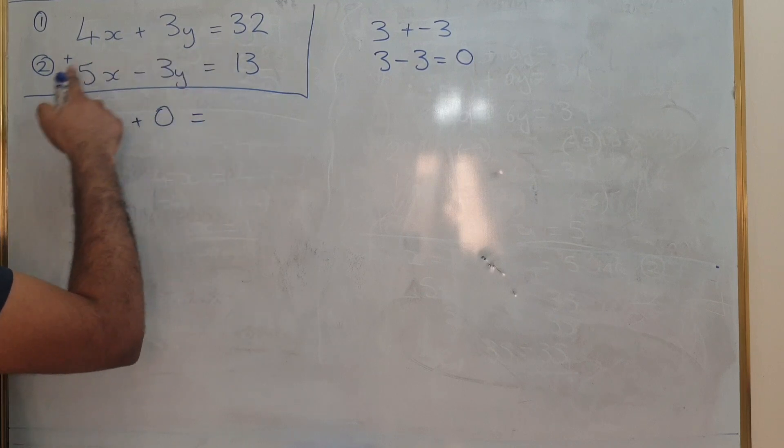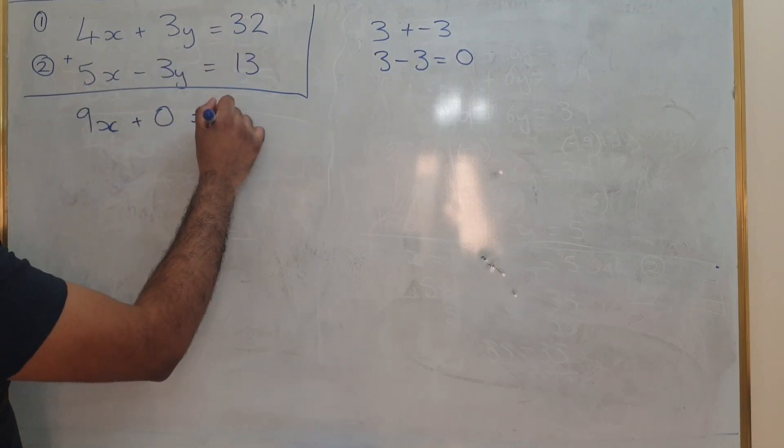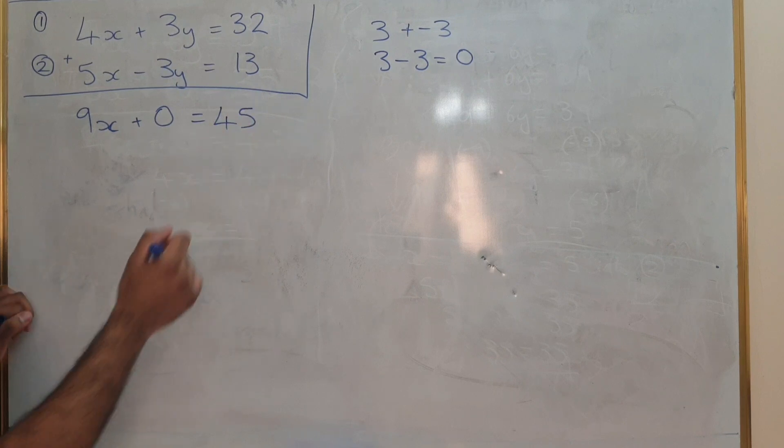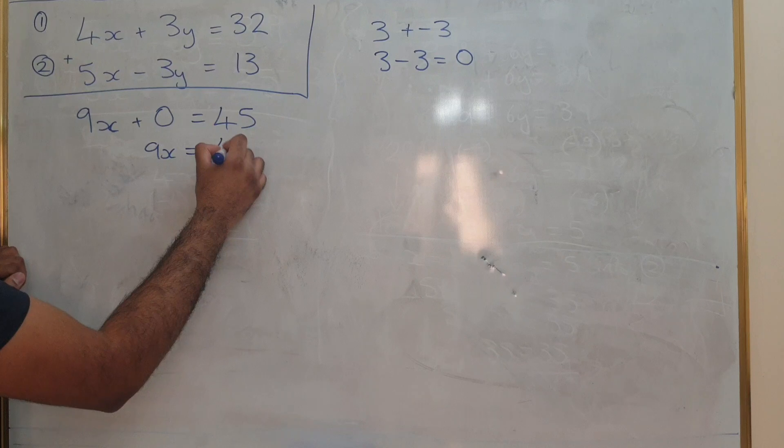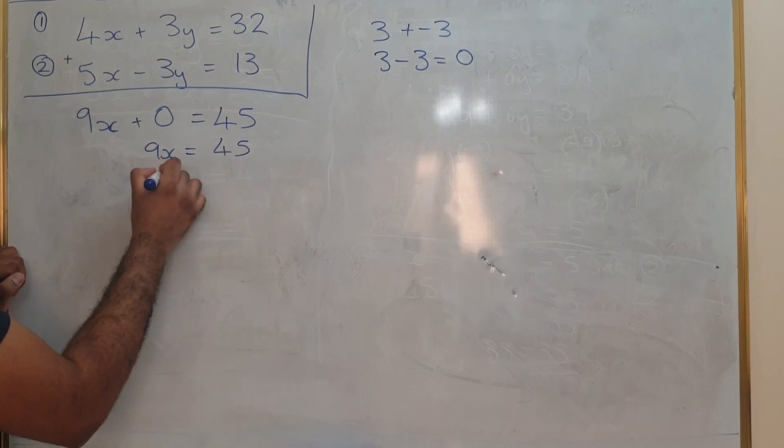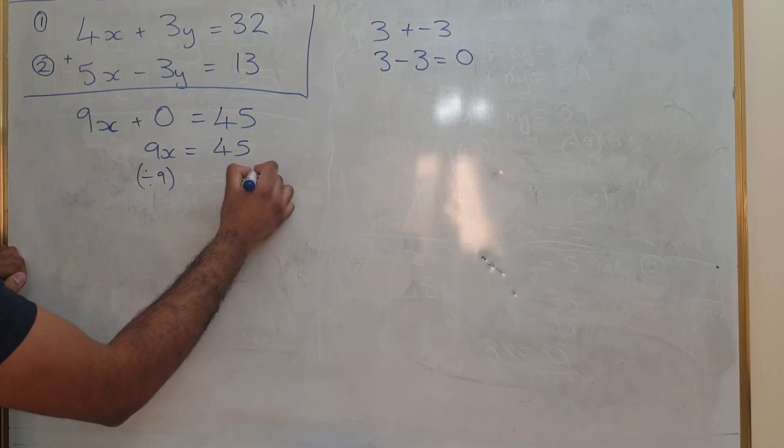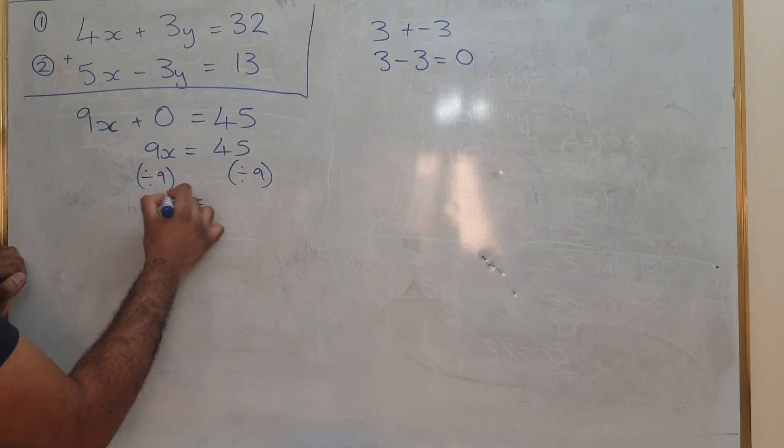Equals 32 plus 13, which is 45. So if 9x is 45, so 9x equals 45. We just divide by 9 on both sides and we get x equals 5.